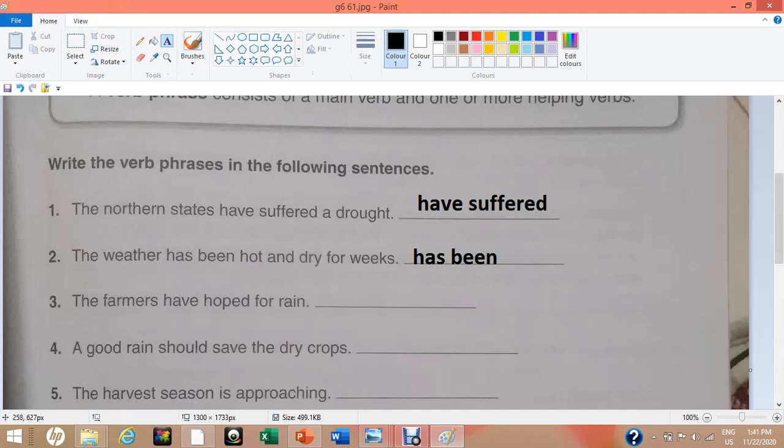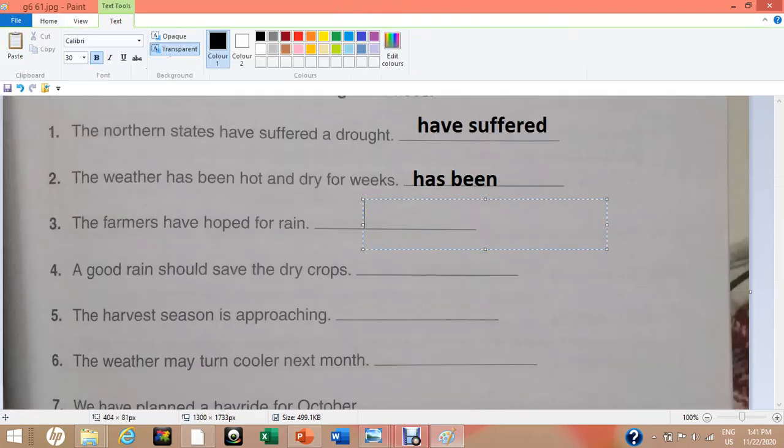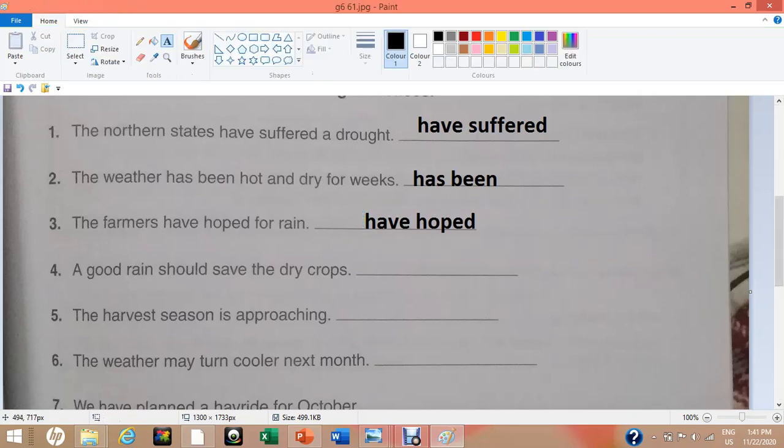Number 3. The farmers have hoped for rain. Here the verb phrase is have hoped. Have is a helping verb. Hope is an action verb. A very good combination of helping verb and the main action verb will result into a verb phrase.